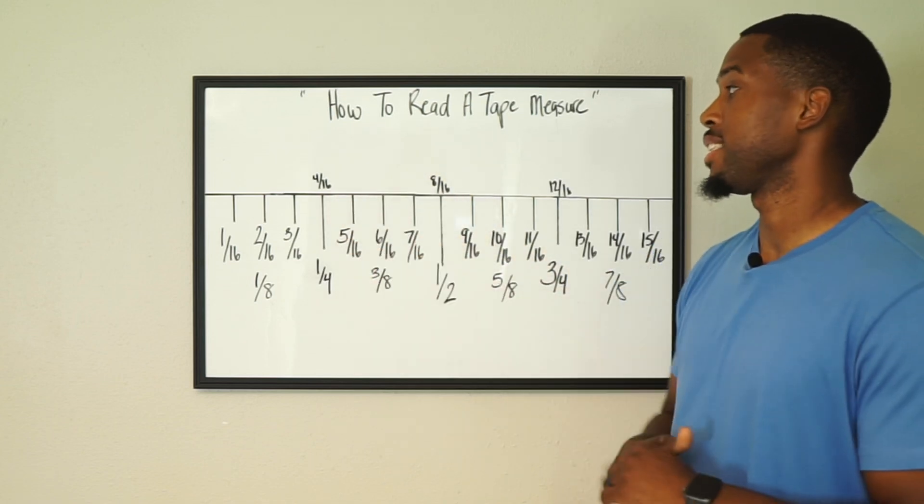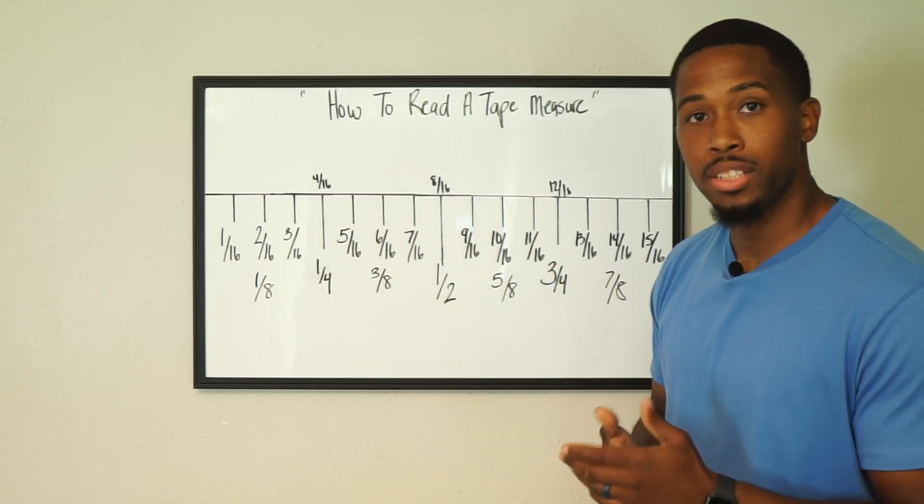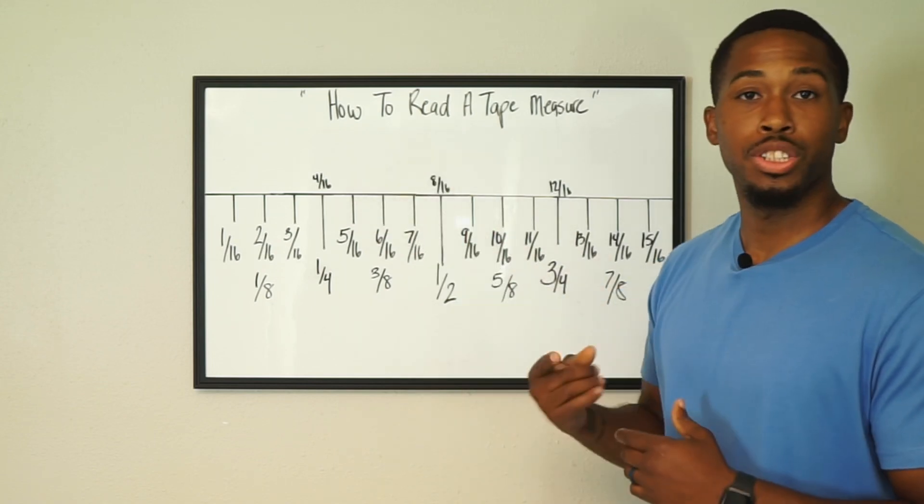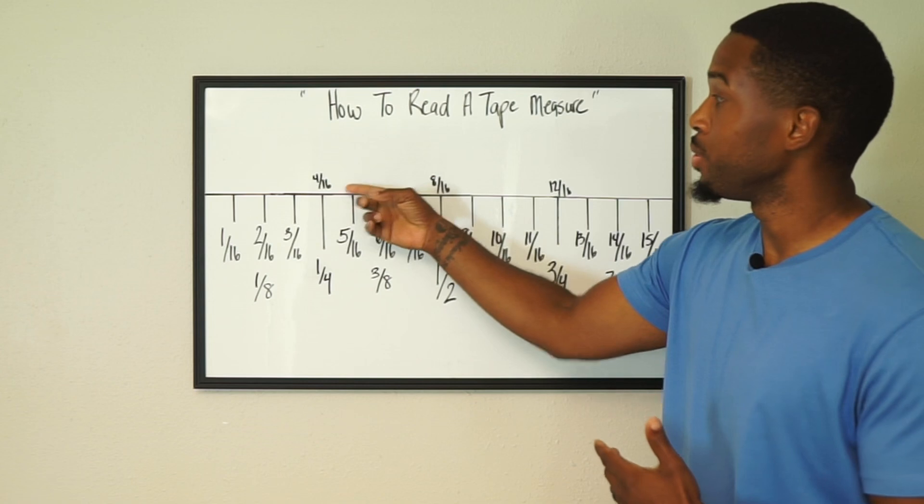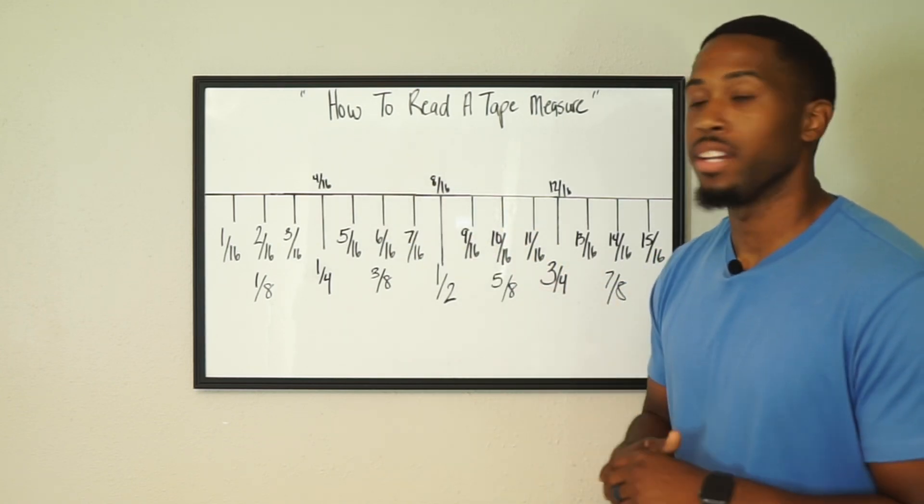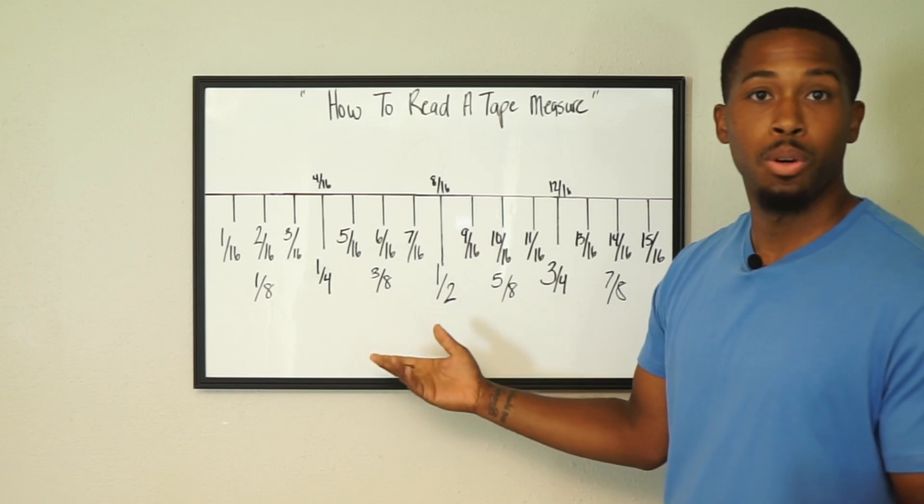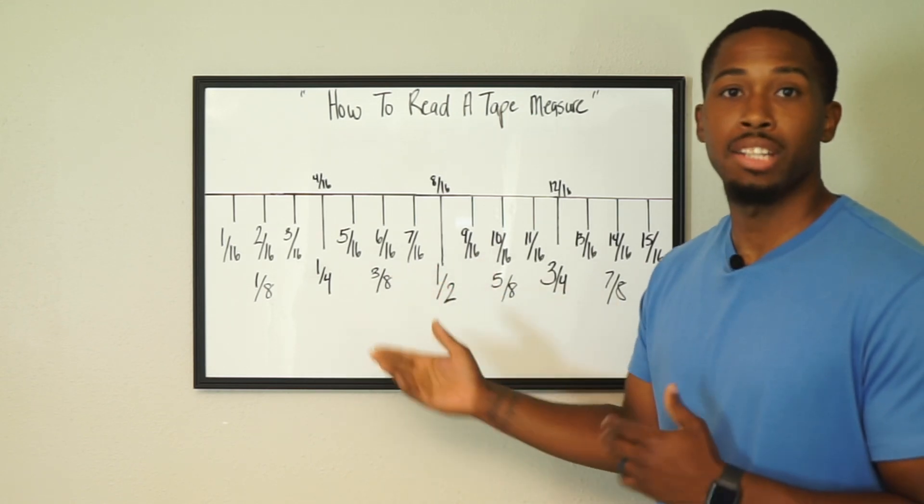Now we'll go to four sixteenths. Four sixteenths is actually a quarter inch, but I'm going to show you guys how we get to a quarter inch. Half of four is two, half of two is one. So we broke that down twice, and we're going to do the same thing with sixteen. Half of sixteen is eight, half of eight is four. That's how you come up with quarter inch. Very simple. Not hard at all, but that's how you come up with that number.